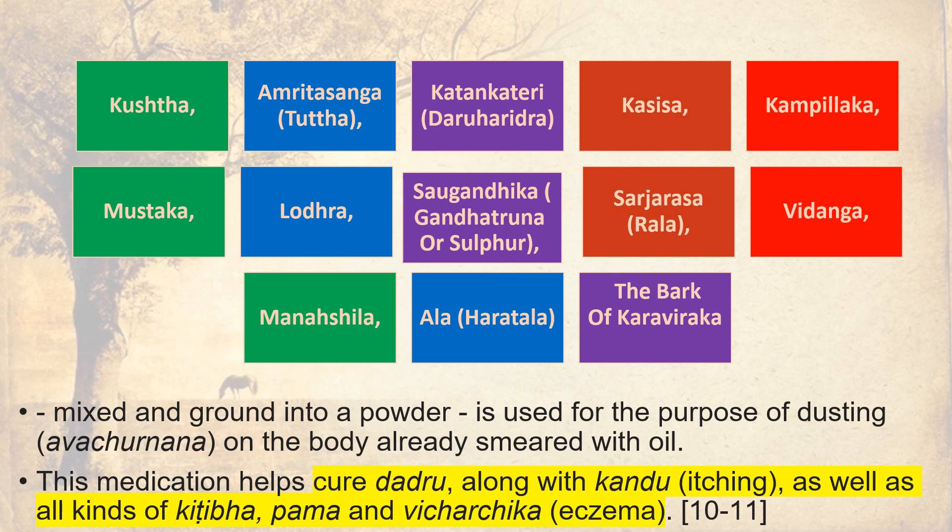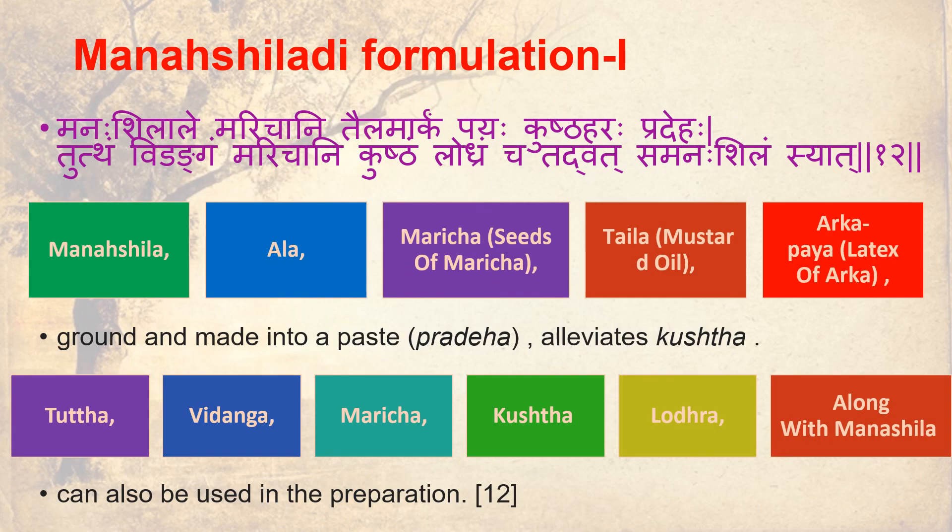Manashila Formulation 1: Manashila, Alay, Marijani, Taila Markam, Payaha — Kushta Pradeha. Also Tuddham, Vidangam, Marijani, Kushta, Lodram can be used. Manashila, Alay, Marija, Taila and Arka — ground and made into a paste. Kushta Tuddha, Vidangam, Marija, Kushta, Lodra along with Manashila can also be used in the preparation.